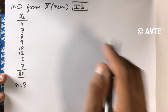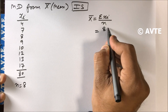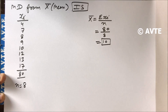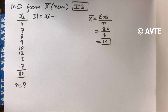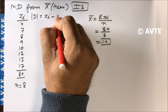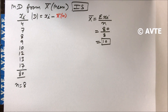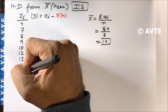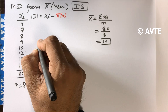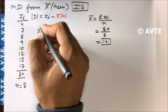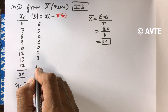Now we find the mean. Mean is sigma xi upon n, that is 80 upon 8, which equals 10. Now we find mod D, which is xi minus mean. Our mean is 10, so we subtract 10 from each observation. The mod D values are: 10−10=0, 9−10=1, 8−10=2, 7−10=3, 4−10=6, 12−10=2, 13−10=3, 17−10=7.